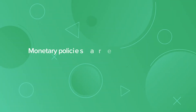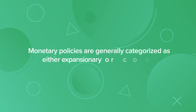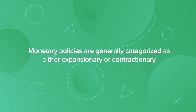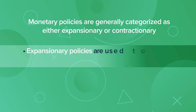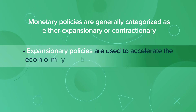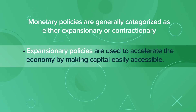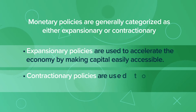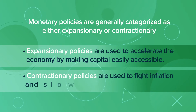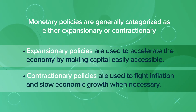Monetary policies are generally categorized as either expansionary or contractionary. Expansionary policies are used to accelerate the economy by making capital easily accessible. Contractionary policies are used to fight inflation and slow economic growth when necessary.